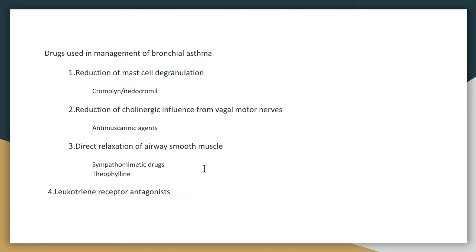The drugs used in the management of bronchial asthma either suppress the production of mediators of inflammation through glucocorticoids, or act as leukotriene receptor antagonists which antagonize the effects of leukotrienes on CysLT1 receptors. You can also have reduction of mast cell degranulation, which prevents the release of mediators of inflammation such as histamine, which causes bronchospasm. The drugs that cause bronchodilation are antimuscarinic agents, sympathomimetic drugs, and theophyllines.